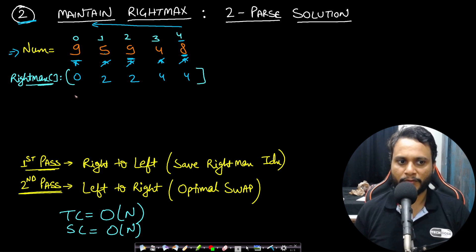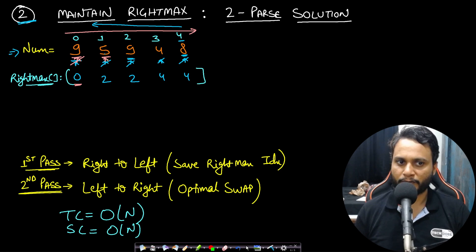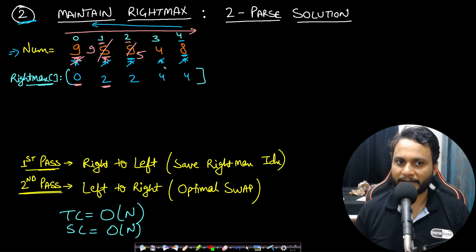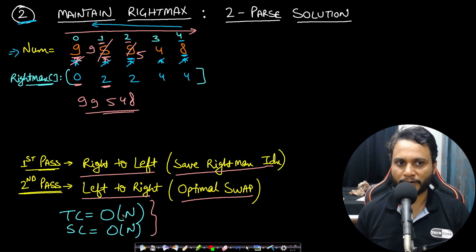In the second pass, we go from left to right. For the first 9, the right max index points to its own index, meaning no larger value exists to the right — skip. For 5, the right max index is 2, which means index 2 has a digit larger than 5. So we swap index 1 with index 2, getting 99548. This is our answer. Time complexity is O(n) and space complexity is O(n).